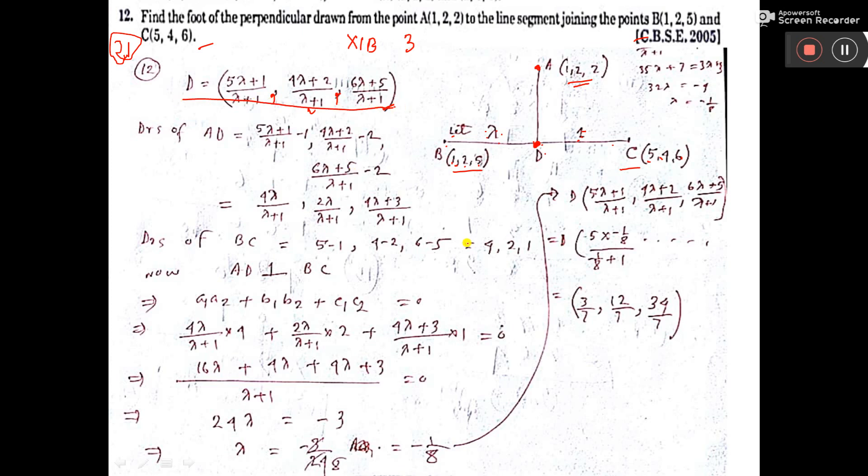That is the point I considered. Now direction ratios of AD, that will be this point this x part minus 1. So this minus 1 here, comma this minus 2 here, comma this minus 2. So this is the direction ratio that is calculated and written here.